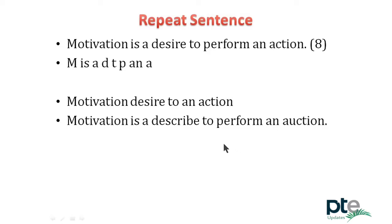Try not to correct yourself mid-sentence. For example, if you said 'motivation, desire to an action' and then remember the full sentence, don't go back and repeat it — this will hurt your fluency marks even if it helps your content marks. It's better to replace a word you don't remember with a similar-sounding word. You can say 'motivation is a describe to perform an auction' — you've replaced two or three words but your fluency is good and at least 50% of words are in correct sequence, giving you two content marks and five each for fluency and pronunciation.